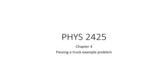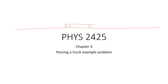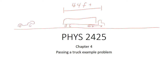Let's do an example problem in which we've got a car passing a truck. So we've got a highway with an 18-wheel truck that is a length of 44 feet, and a vehicle that is a length of 11 feet. The truck is moving at some velocity V sub T, and the car is moving at some velocity V sub C.